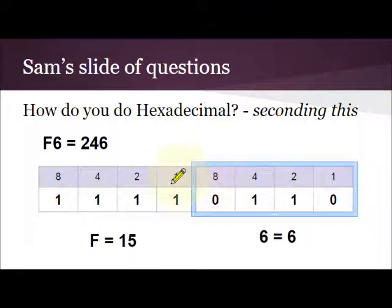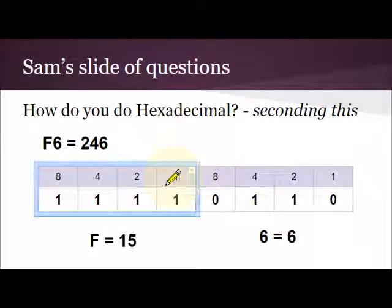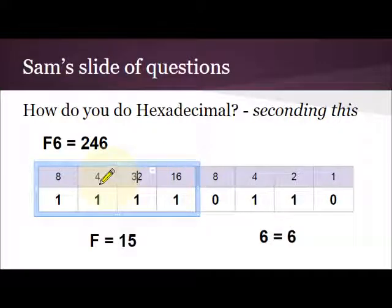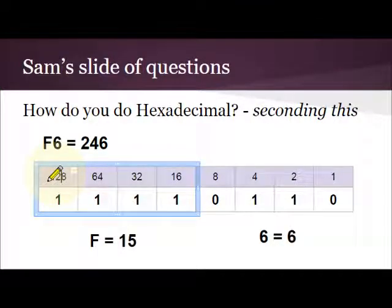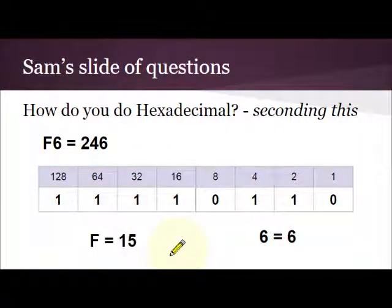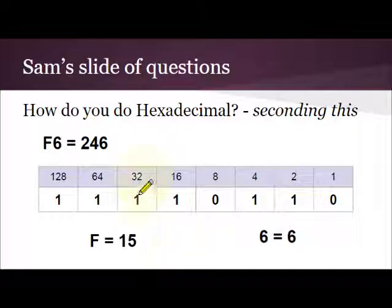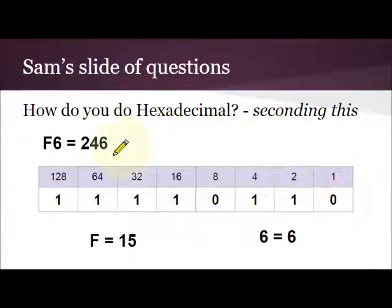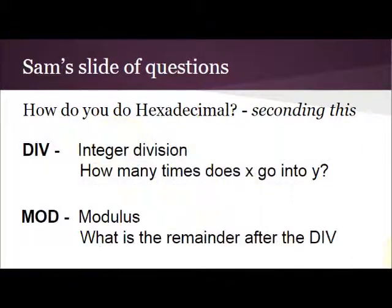Put them together properly. This becomes — now 16, this becomes 32, 64, because I'm doing powers of 2 — so 1, 2, 8. Now if I add up 128, 64, 32, 16, 4, and 2, I end up with 246. So you can do it in reverse.